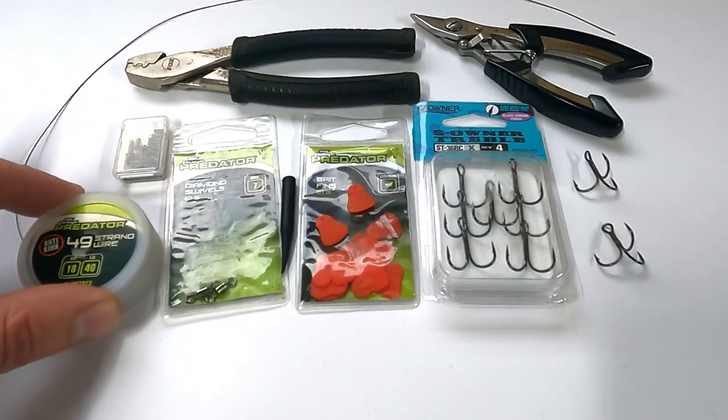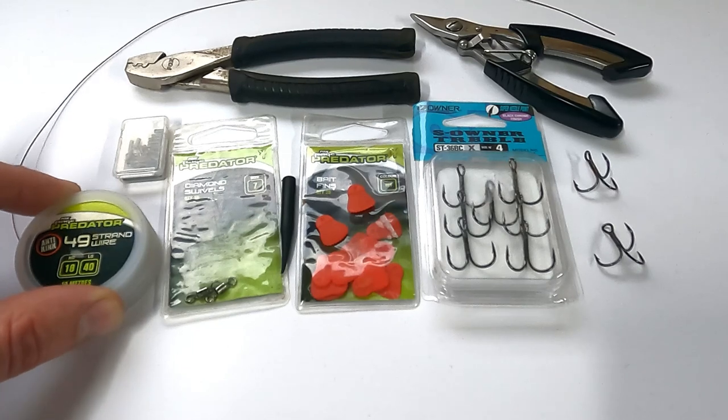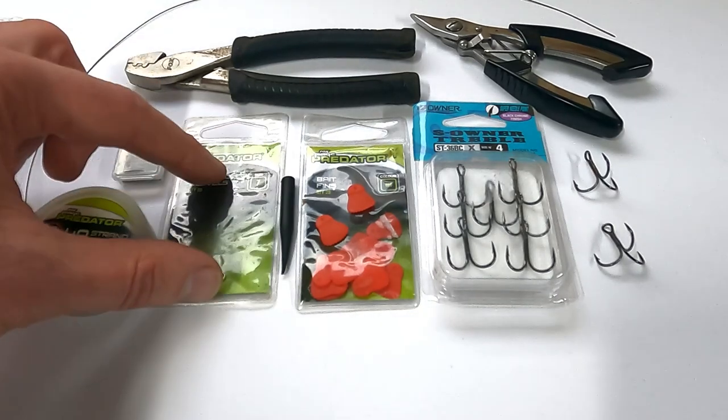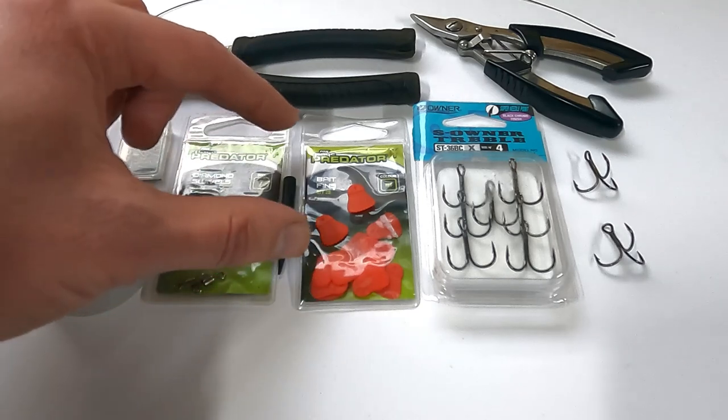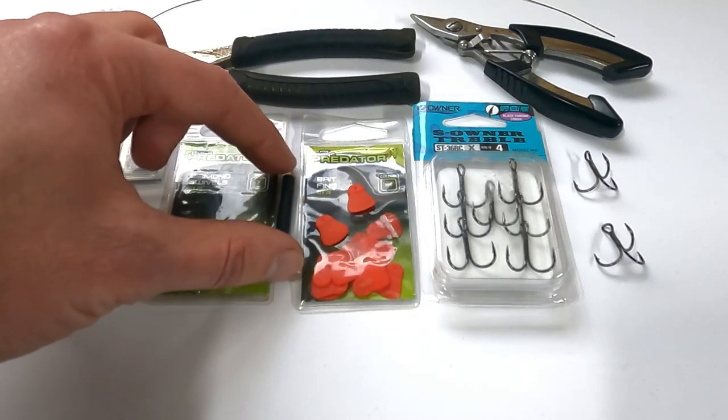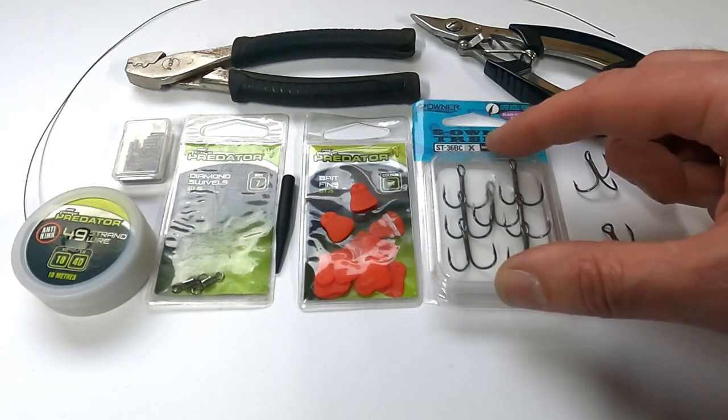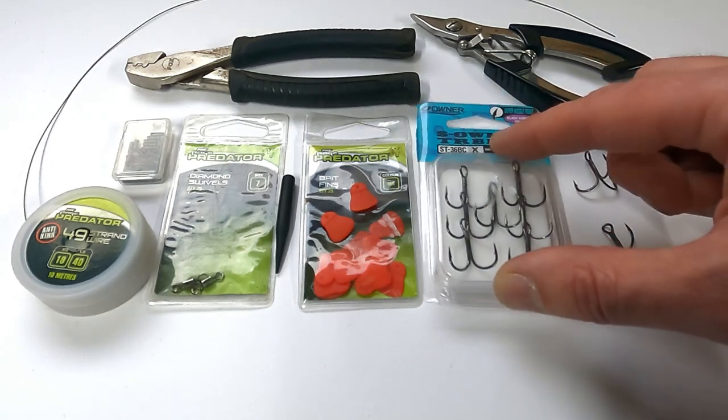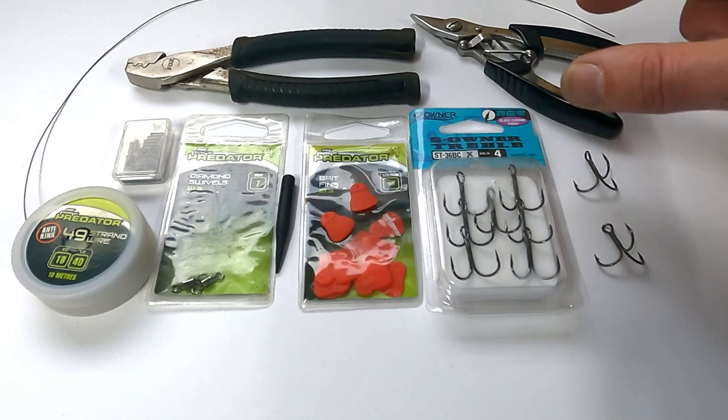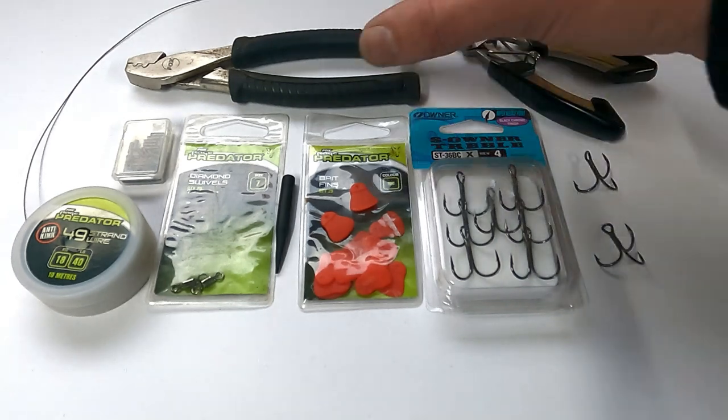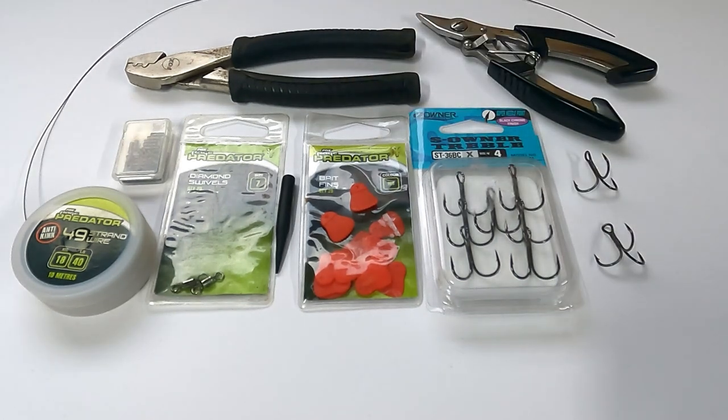So I've chosen Fox 40lb wire, which is my favourite, with some crimps to match, some nice strong swivels, a Fox large safety sleeve, some bait fins, some size 4 trebles, which I like for most of my pike fishing, some wire cutters, and a crimping tool. That's everything you're going to need.